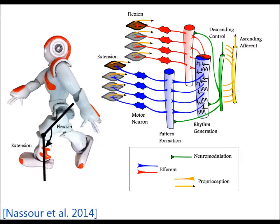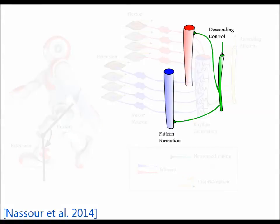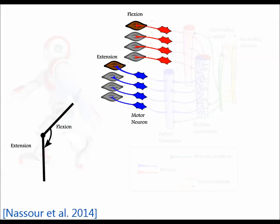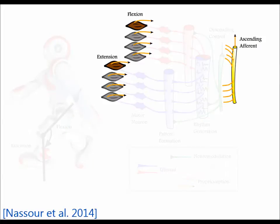The pattern formation layer is responsible for shaping the generated patterns. It receives descending signals from the high centers, these signals control the dominated rhythm at each joint. The sensory neurons provide proprioceptive and extraseptive feedback into the CPG.